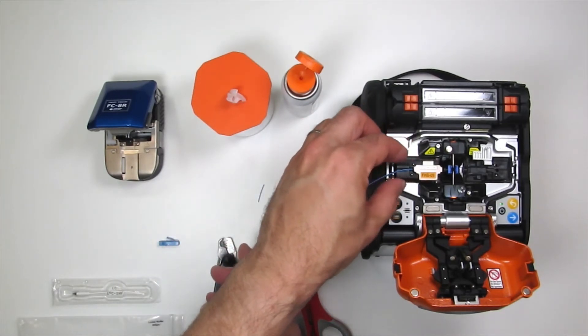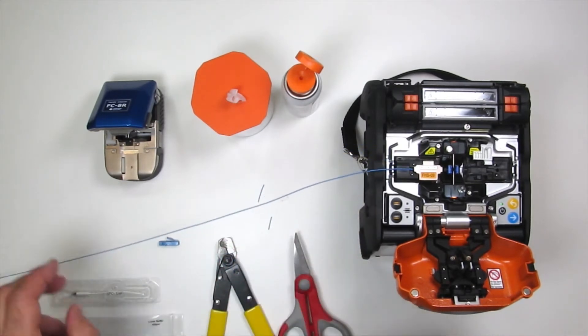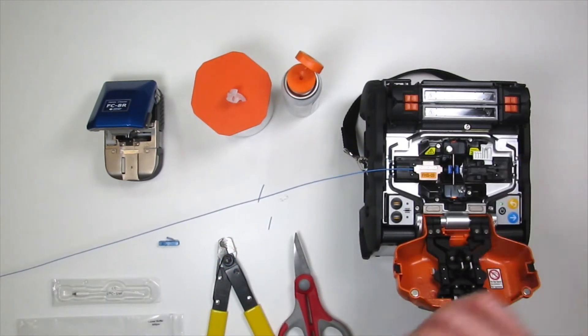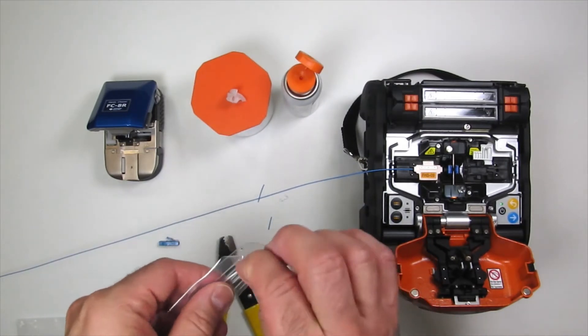Place the fiber holder over the two pins on the left side. Make sure the fiber lays in the groove next to the electrodes. Do not touch the fiber.